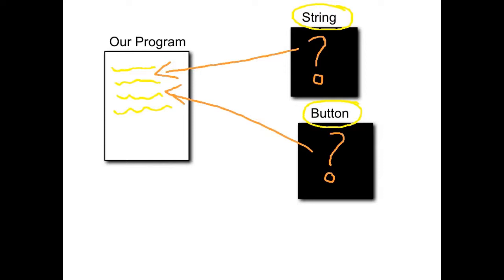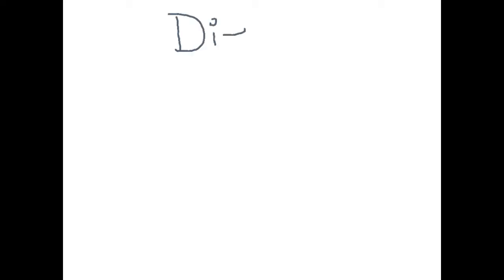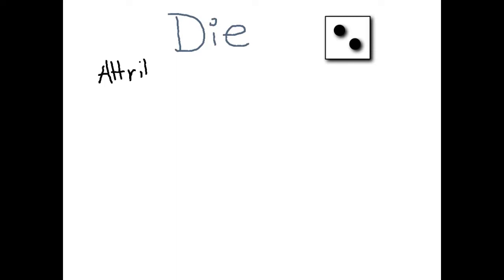We are going to decide on a blueprint for a particular object to use in a program. We're going to start with something nice and easy and create a die object — and by die I mean like dice. When we think about what object we want to create, we first have to think about what attributes are associated with that object, and then we also need to think about what behaviors or what things we want to be able to do with our die.